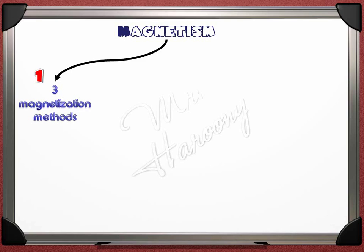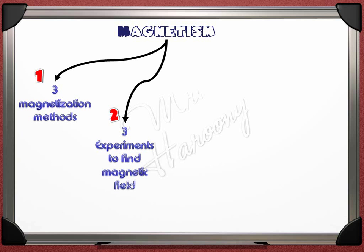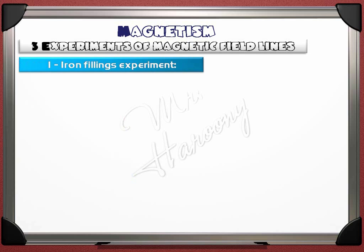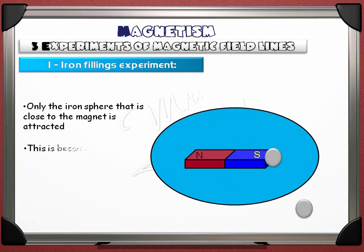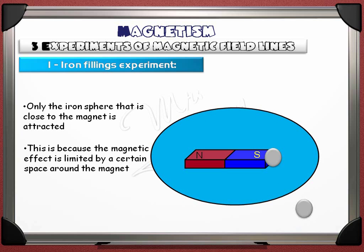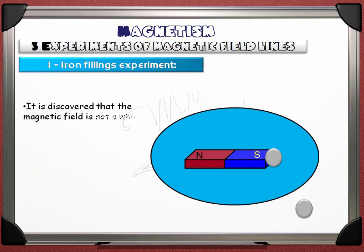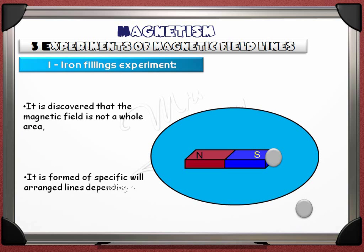We have now finished the three methods of magnetization — induction, stroking, and electric DC magnetization. Now let's talk about the magnetic field and three experiments to plot the magnetic field lines. To understand the concept, consider a strong magnet and two steel spheres — only the sphere close to the magnet is attracted. This is because the magnetic effect is limited to a certain space around the magnet, called the magnetic field. The magnetic field is not a whole area; it is formed of specific, well-arranged lines depending on the shape of the magnet.